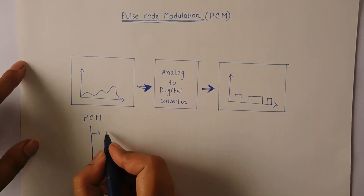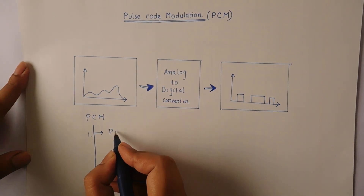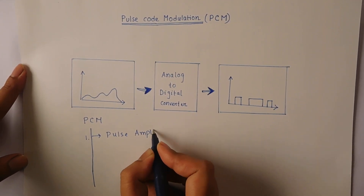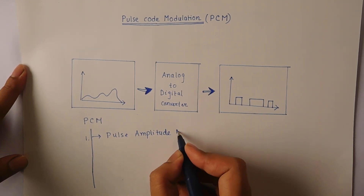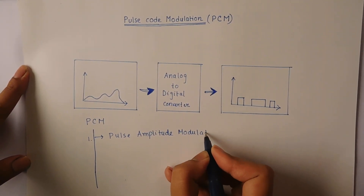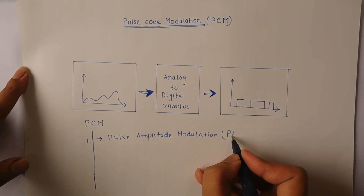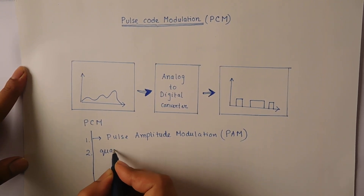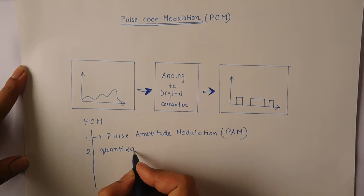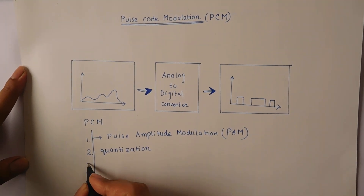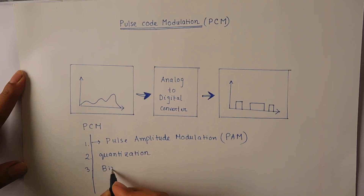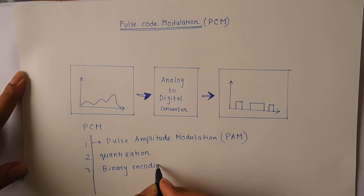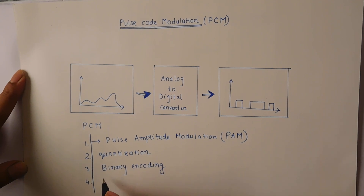The first process is Pulse Amplitude Modulation, also called PAM. The next process is Quantization. The third is Binary Encoding, and the last step is Digital-to-Digital Encoding.